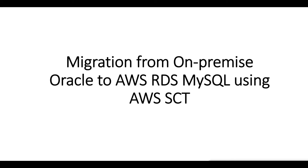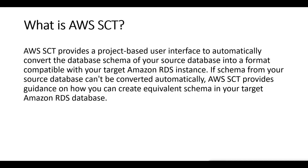Hello everyone. Today's topic is heterogeneous migration of an on-premise Oracle database. Here we are using EC2 as the on-premise Oracle database server to AWS RDS MySQL, and for this we will be using AWS SCT — the Schema Conversion Tool. It converts your existing schema from one database engine to another. You can convert relational OLTP schema or data warehouse schema, and the converted schema is suitable for Amazon RDS, EC2, or stored as data on an S3 bucket.